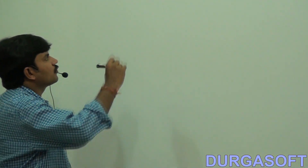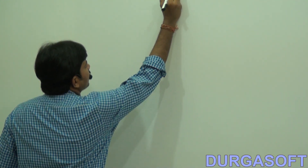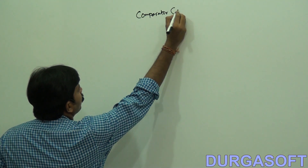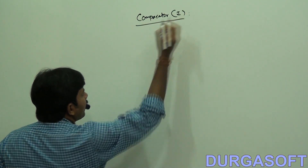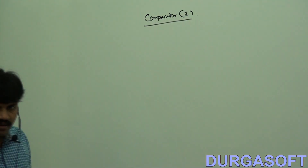Sometimes I'm not satisfied with the default natural sorting order, or the default natural sorting order is not available. How we can handle that? Then we should go for the Comparator interface. The Comparator concept